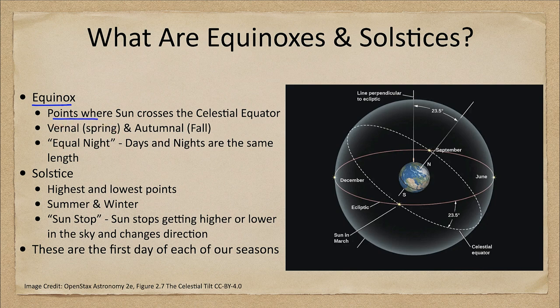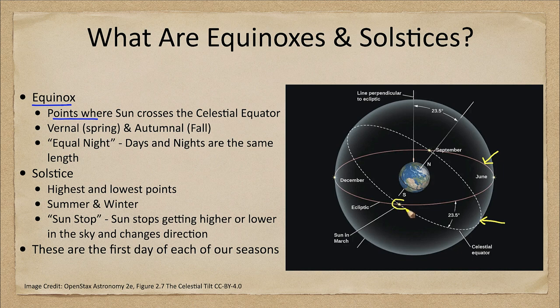Let's take a look at that here on our image. We see that the celestial equator is the dotted line here, and this pink line is what we call the ecliptic, or the path of the sun. Those two circles on the celestial sphere will cross at two points — once here in March and once here six months later in September.